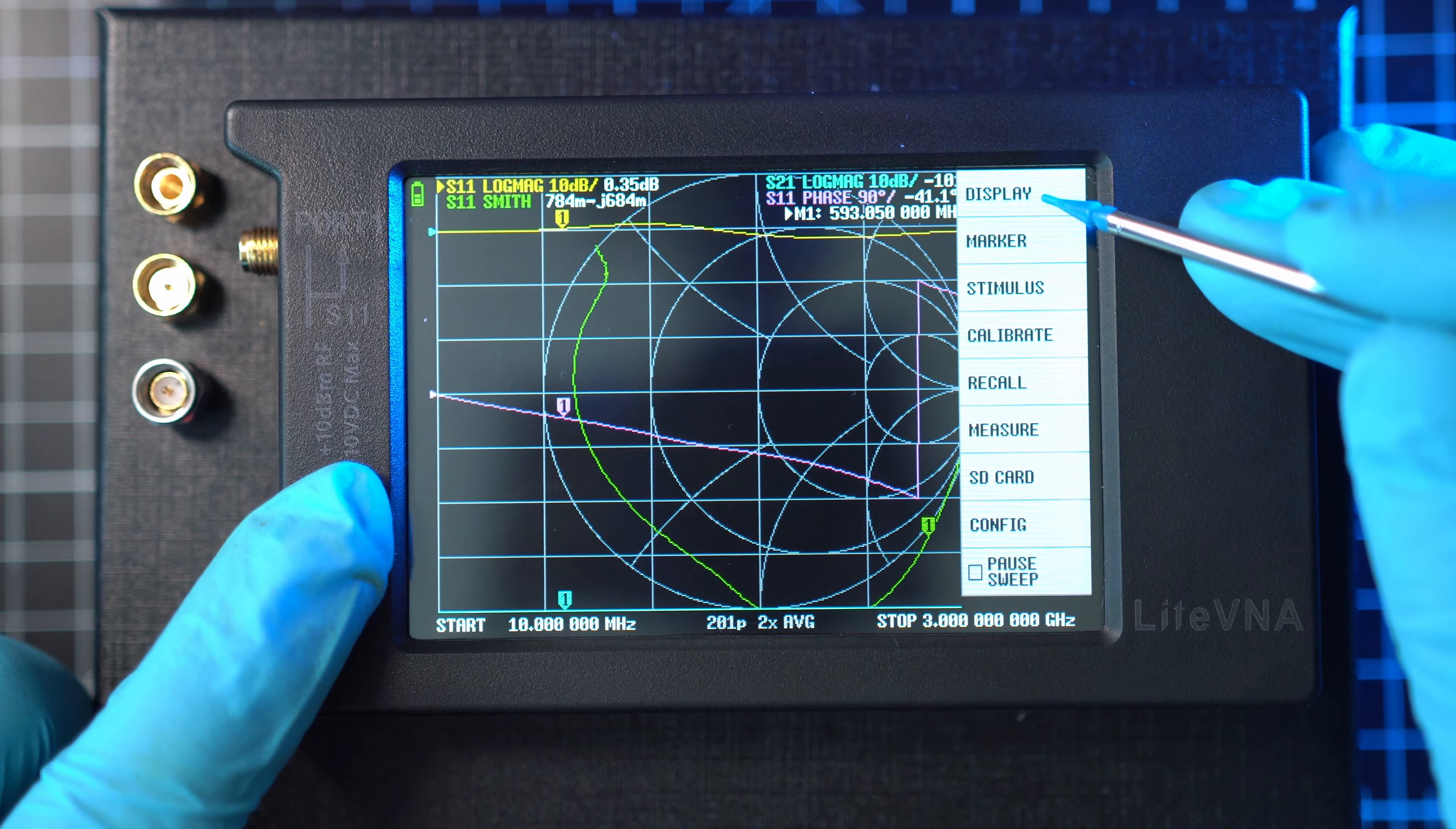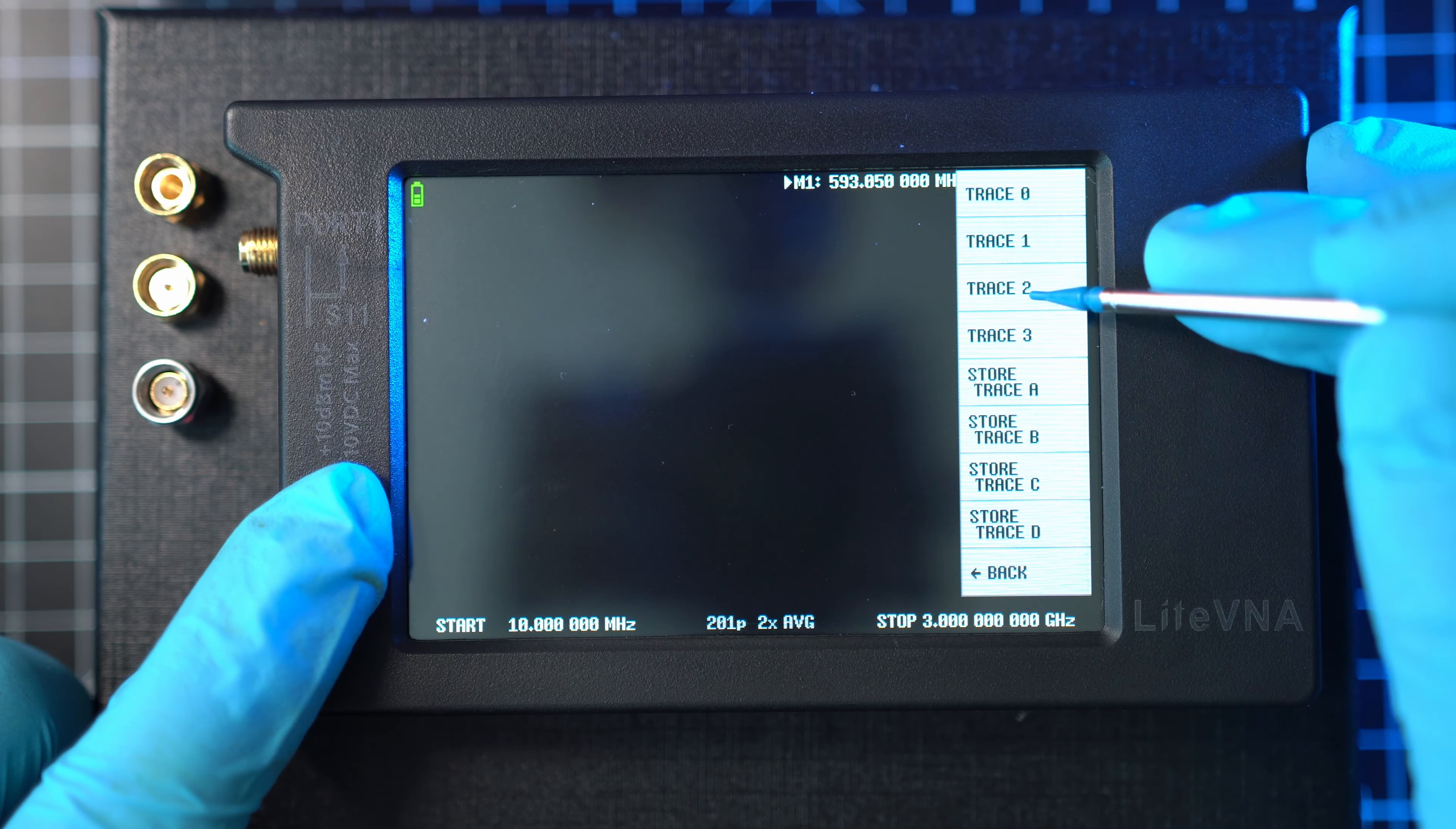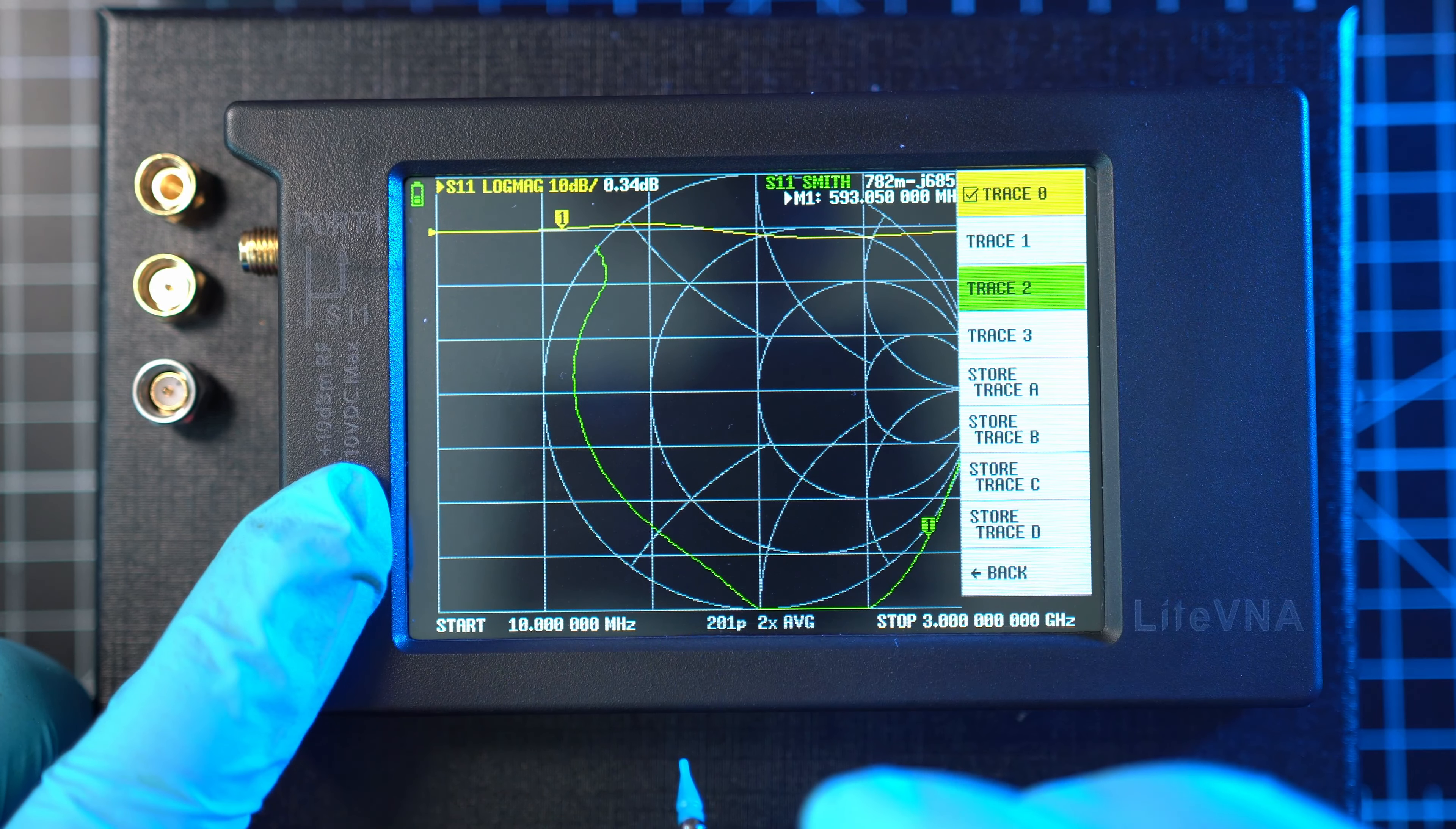Go menu, display, then trace and turn off all four traces. Now turn back on trace number two and trace number zero in this order. Otherwise it won't work.